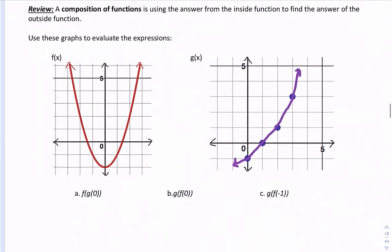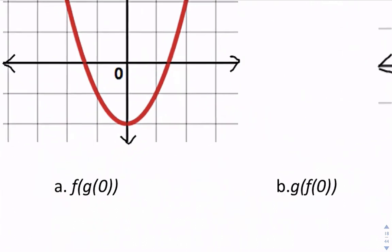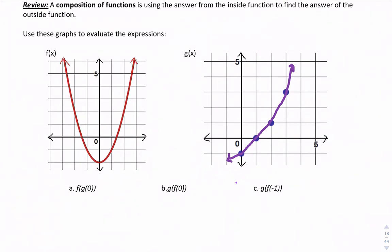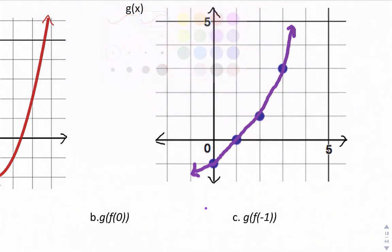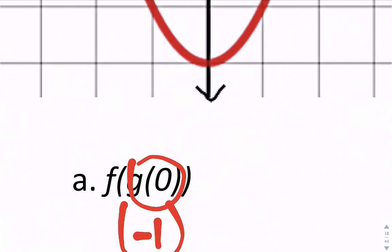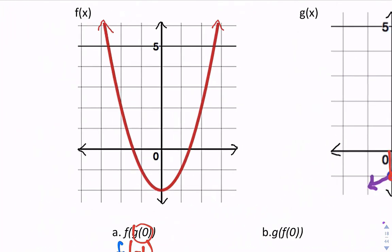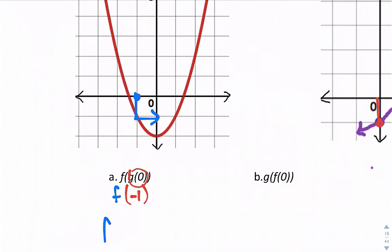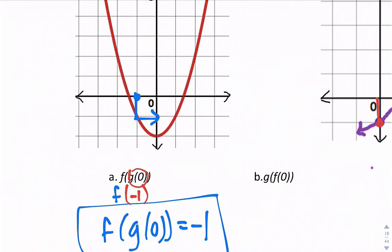For the first one, find f of g of 0. We start with the inside function g of 0, which equals negative 1. So now we find f of negative 1. When x is negative 1, we go down and over, and we get negative 1. So f of g of 0 equals negative 1. Again, we use the answer of the first function to find the answer for the second function.